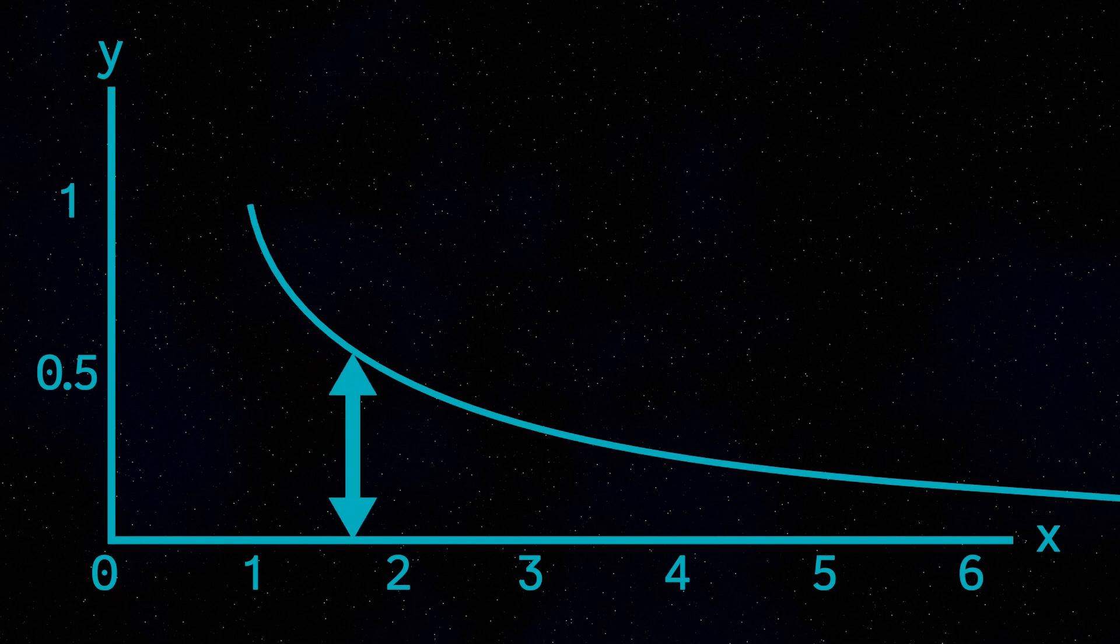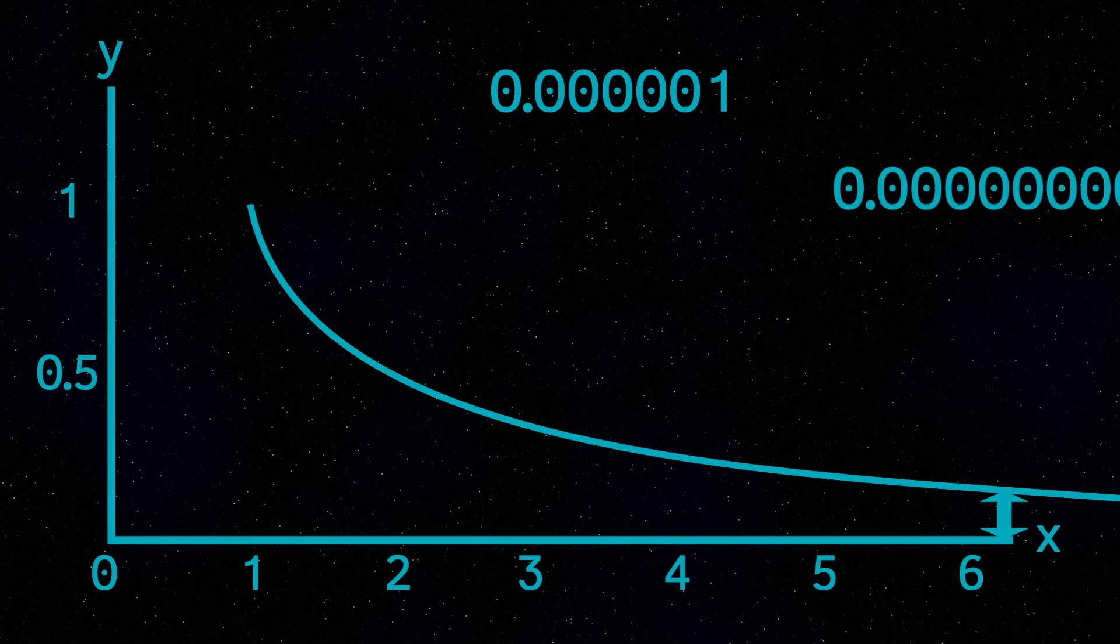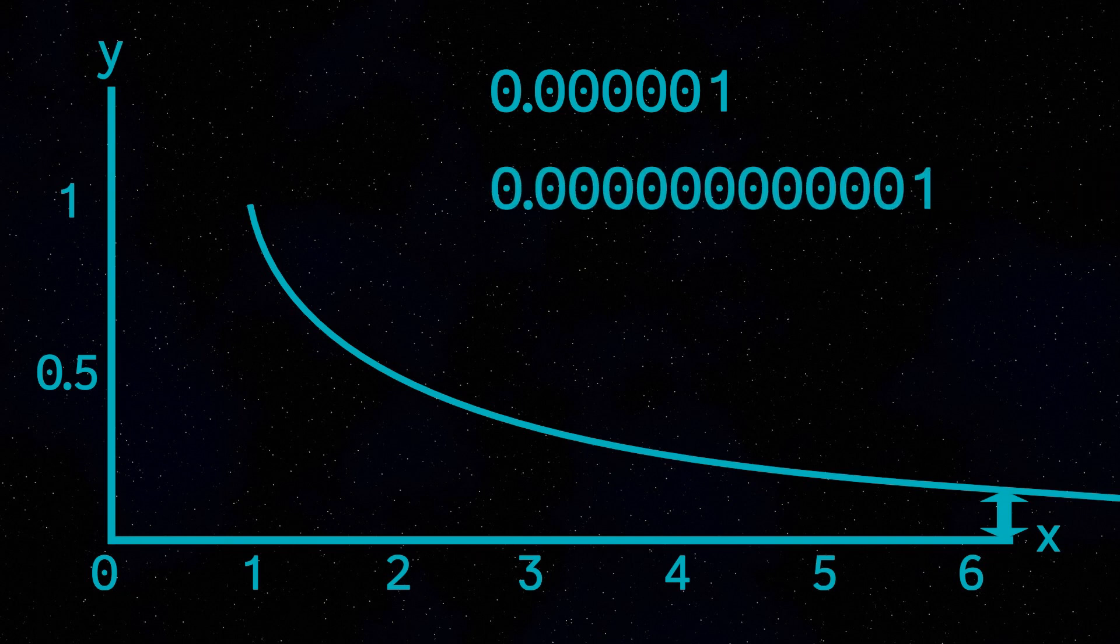The key to this shape is the fact that the line never, ever reaches zero. 1 divided by a million is a very small number, but it's not quite zero. 1 divided by a trillion is a very, very small number, but it isn't quite zero. And so on.